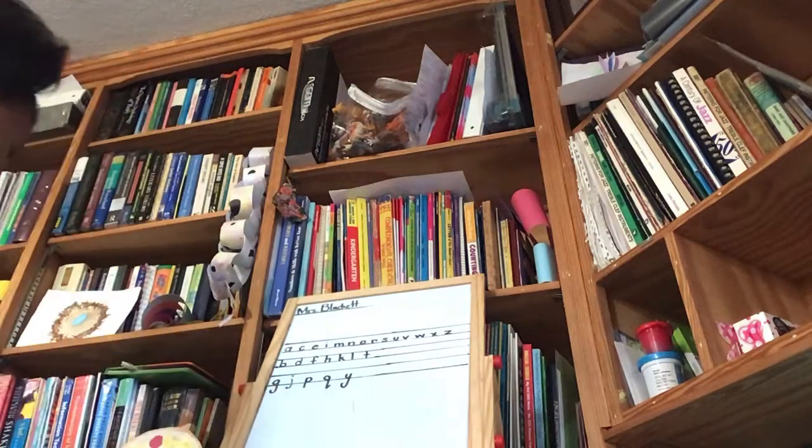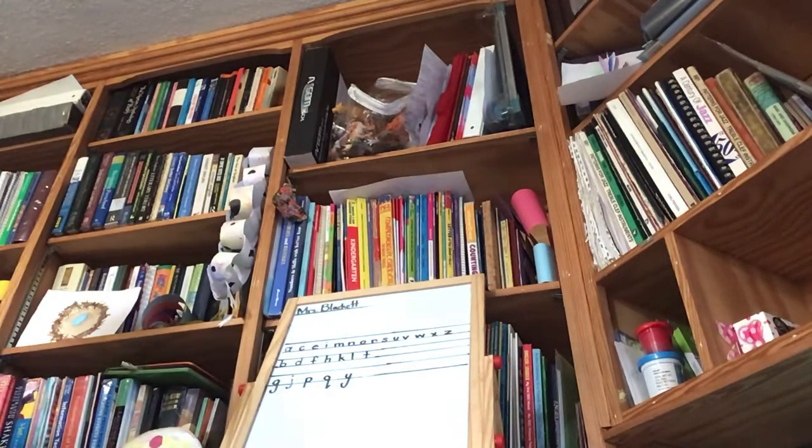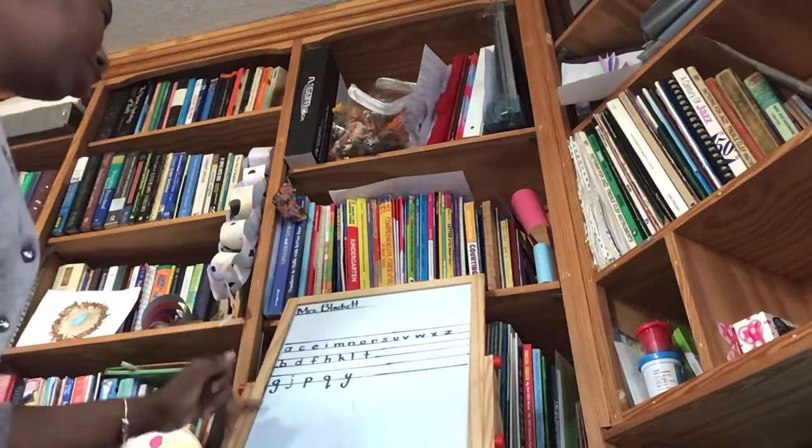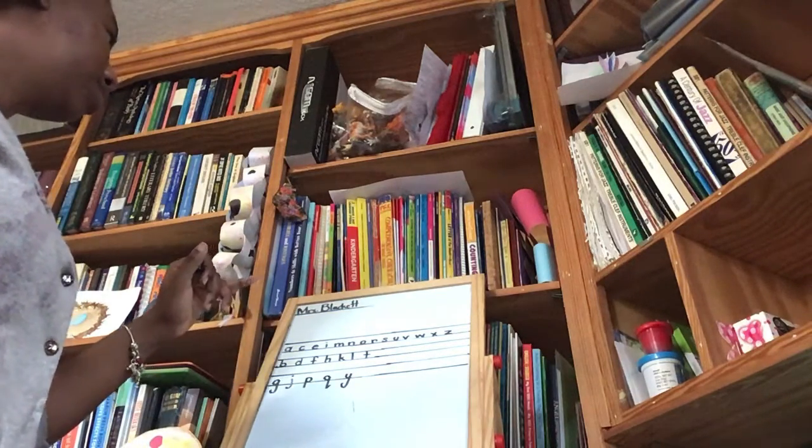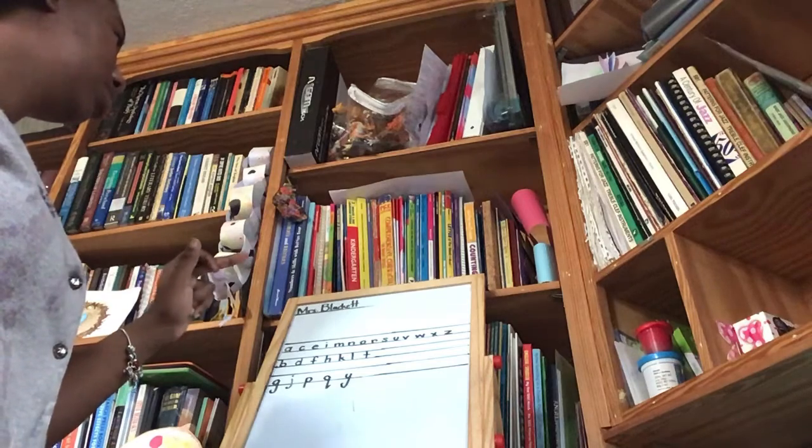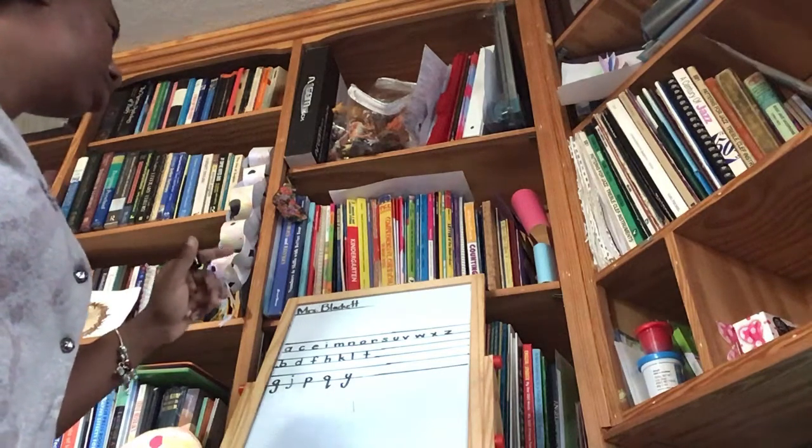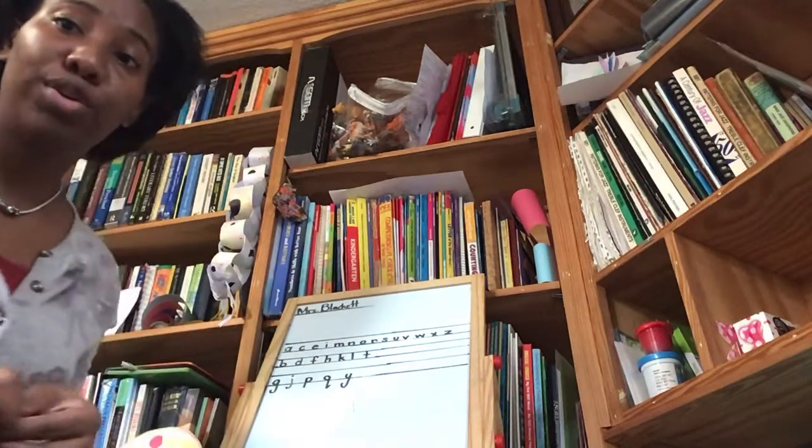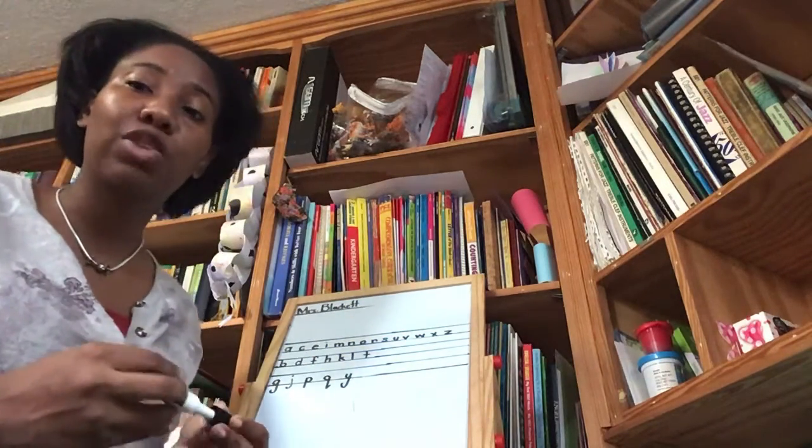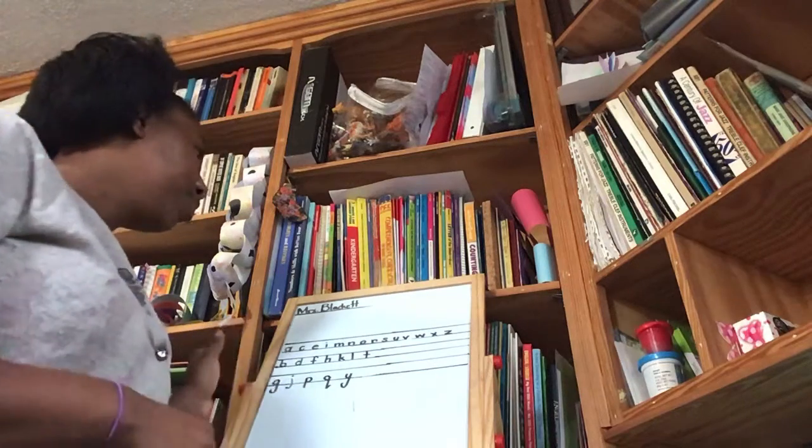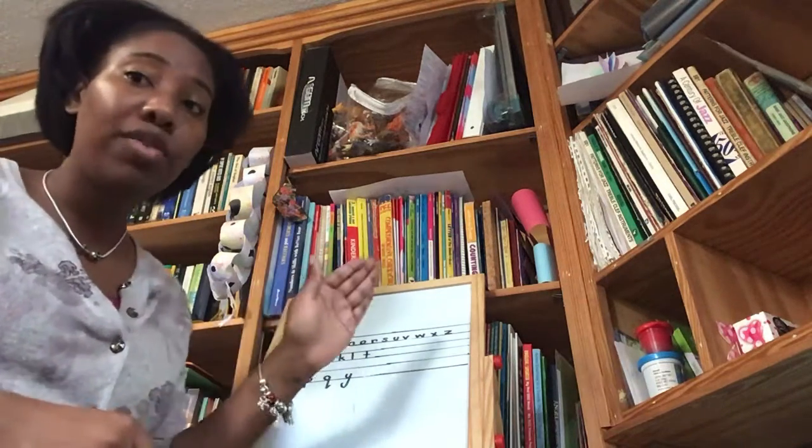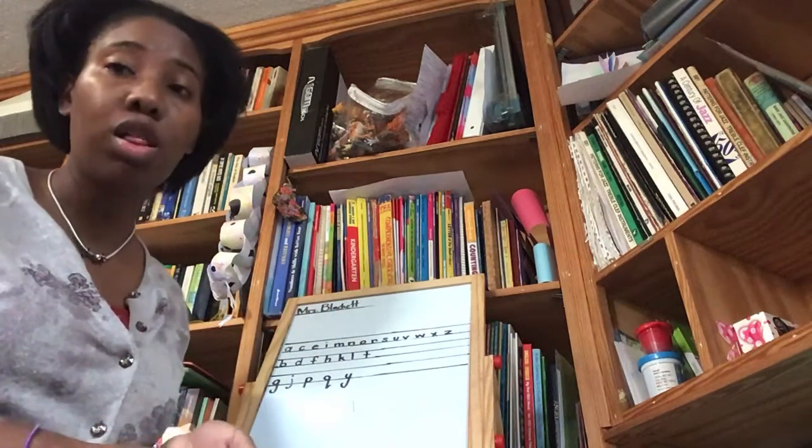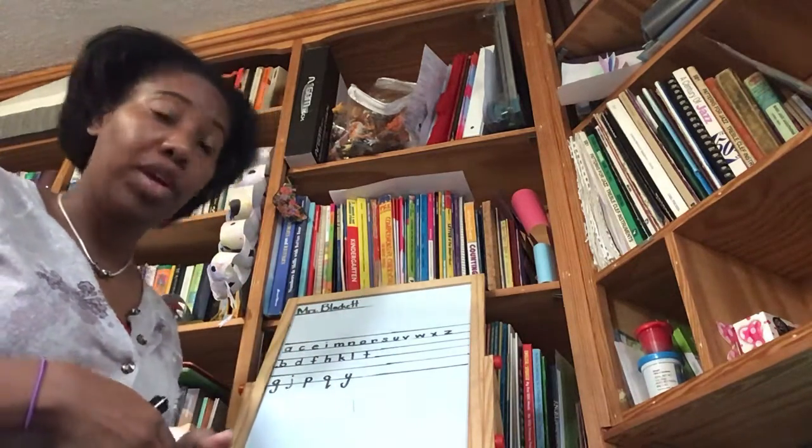Okay. So those are our small, our tall, and the letters that fall. So, what I want you to do is I want you to try to write all of these letters. Write all of them, how they're supposed to be written, depending on if they're small, tall, or if they fall. Okay?